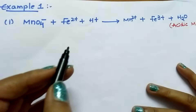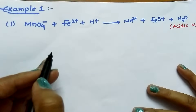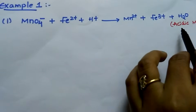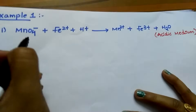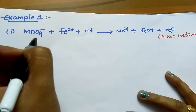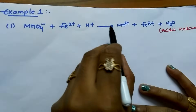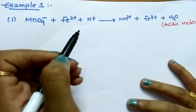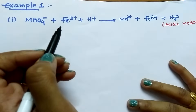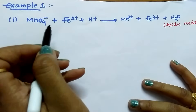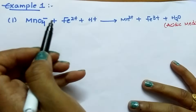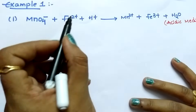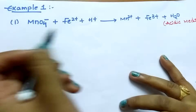By using these steps, balance this reaction in acidic medium. First, find out which one is undergoing oxidation and which one is undergoing reduction. For identifying that, you should have an idea regarding oxidation numbers. For finding oxidation numbers, see my previous video.